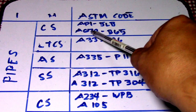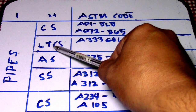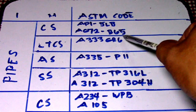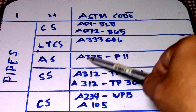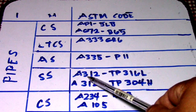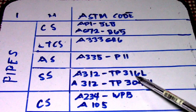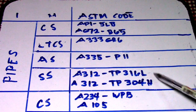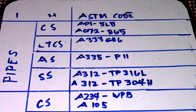Continuing pipe ASTM codes: CS also includes A672 B65. For LTCS, the code is A333 Grade 6, which is SMLS (seamless). For alloy steel (AS), the code is A335 P11. For stainless steel (SS), codes are A312 Type 316L and A312 Type 304H — both are SMLS (seamless).